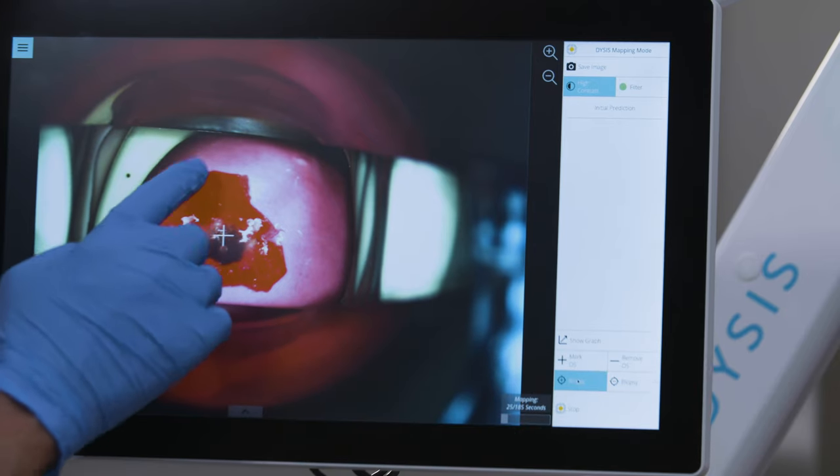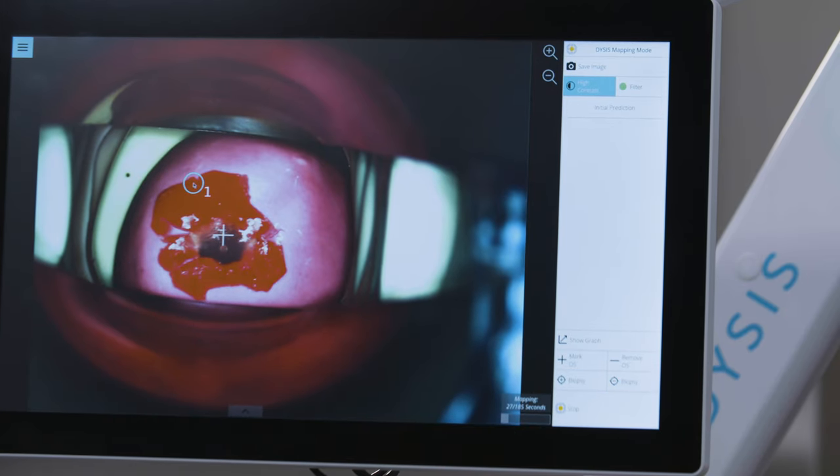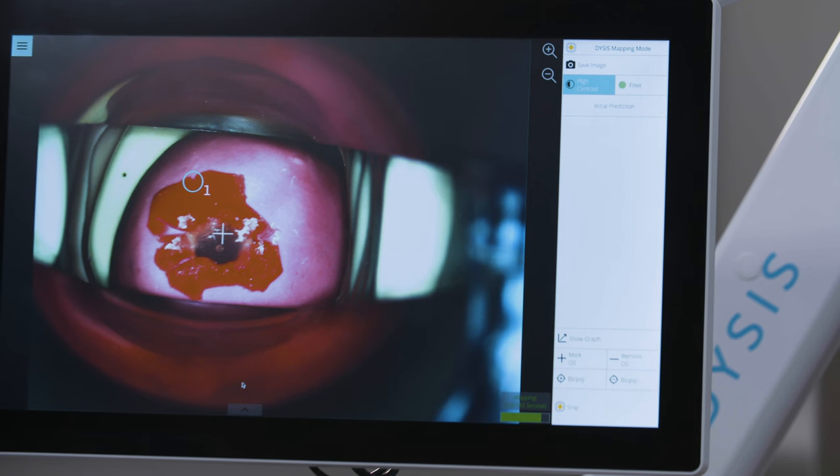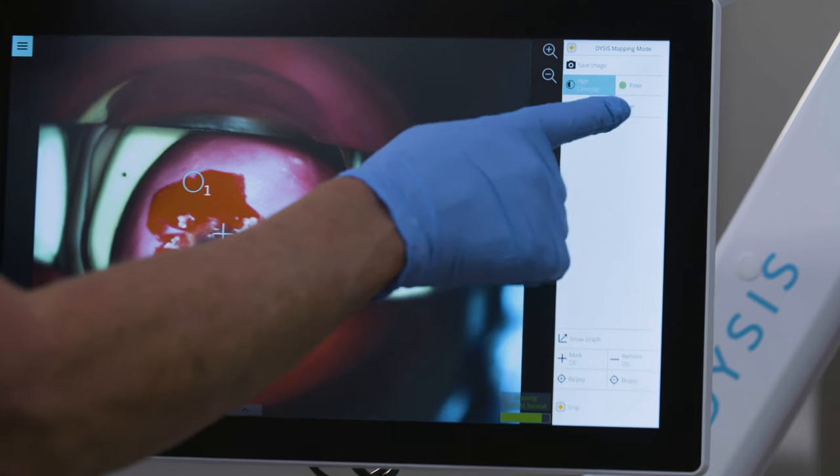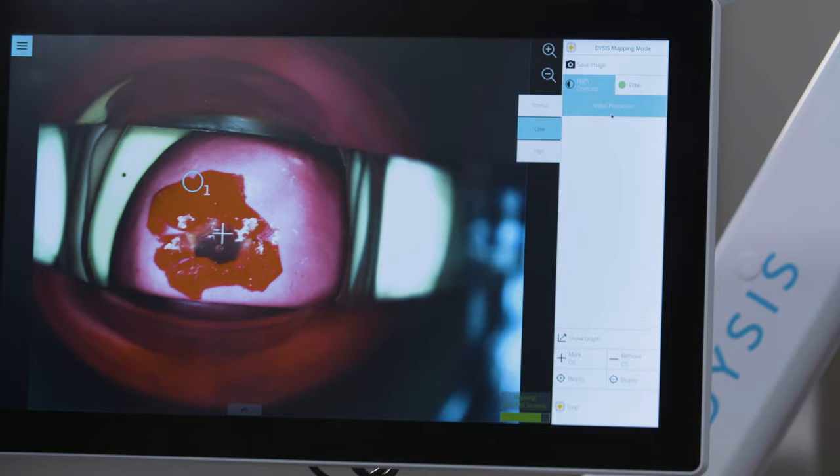Digital biopsy markers can be placed on the cervix at any time during the examination. After you have completed your visual assessment, initial prediction, and biopsy site selection, the Dysys map may then be displayed.